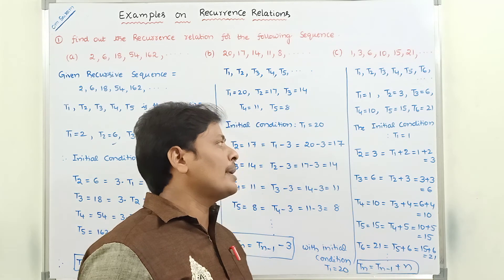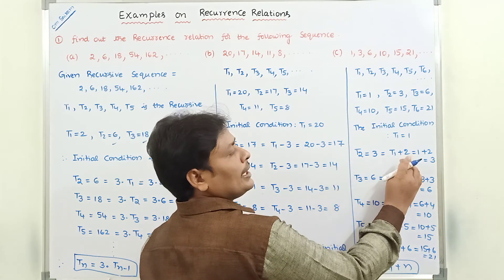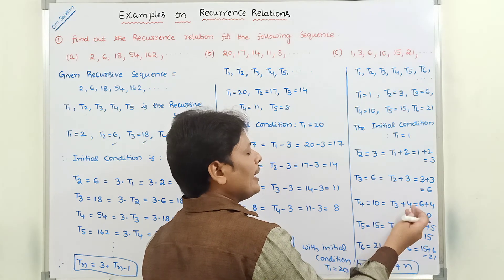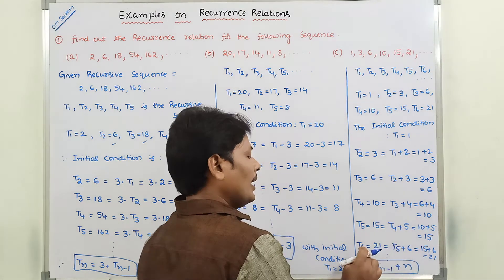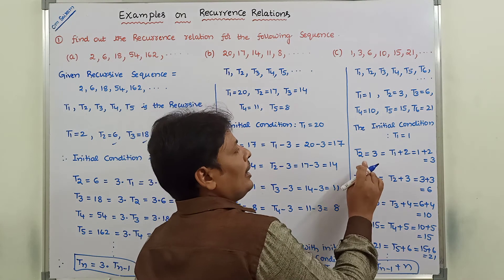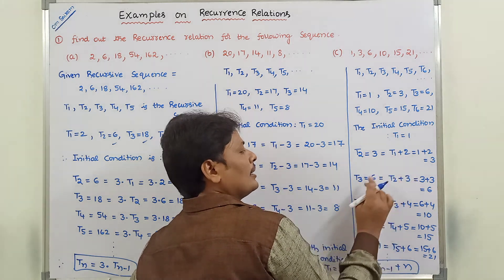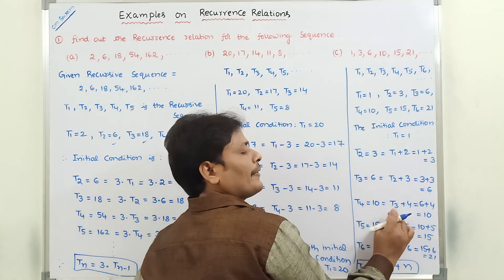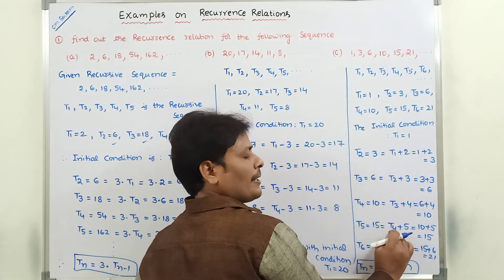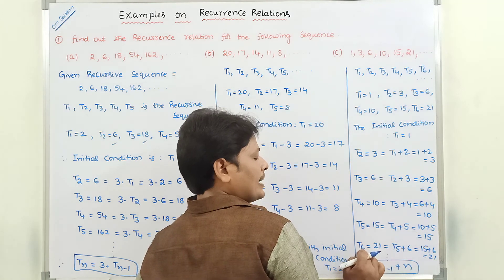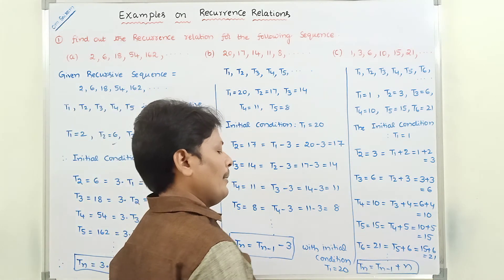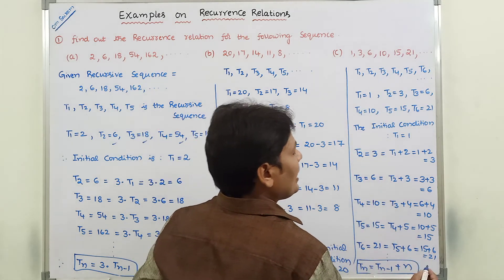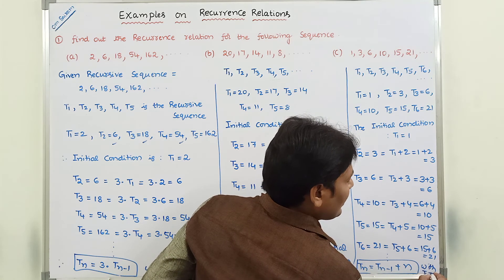Observe that the N value added each time matches the current term index. When n = 2, we add 2; when n = 3, we add 3; when n = 4, we add 4, and so on. Therefore, Tn = T(n-1) + n with initial condition T1 = 1.